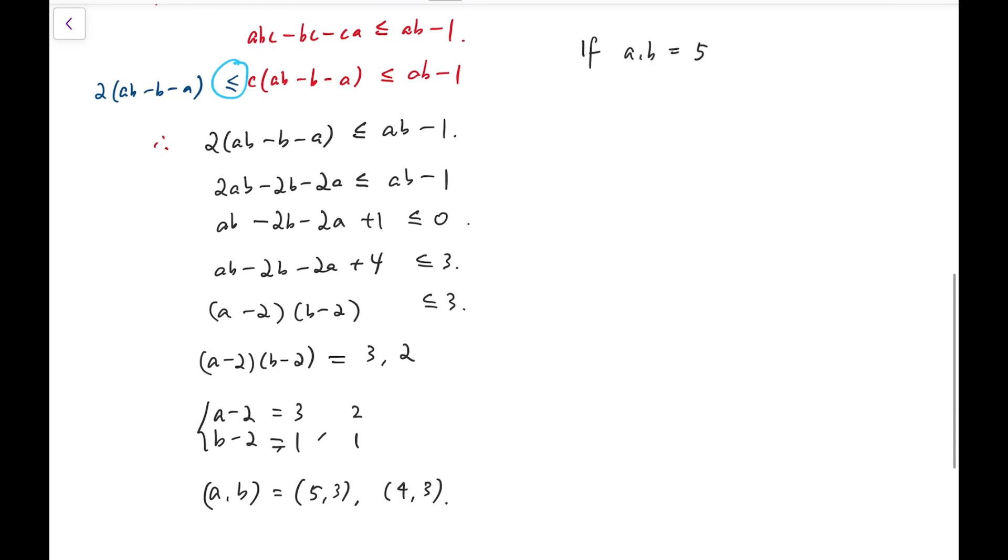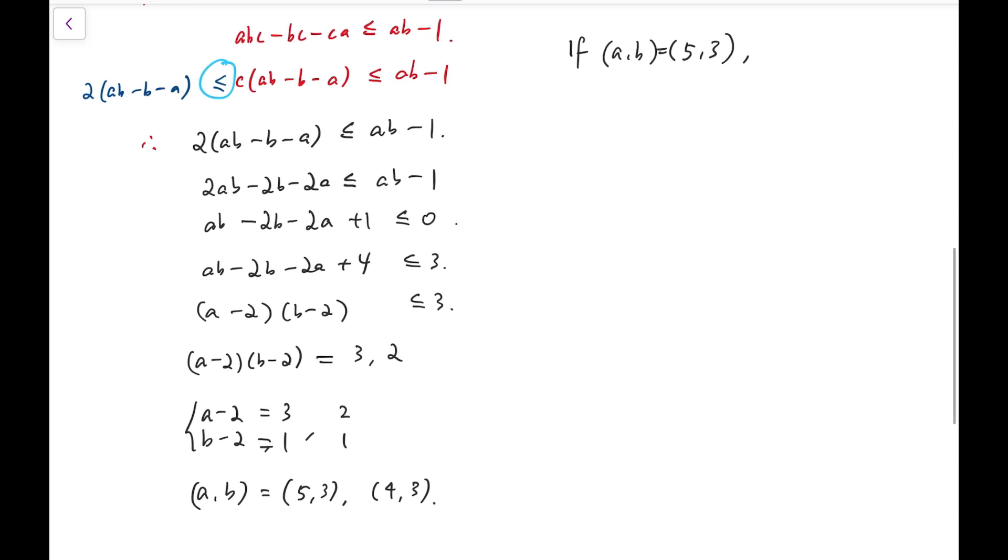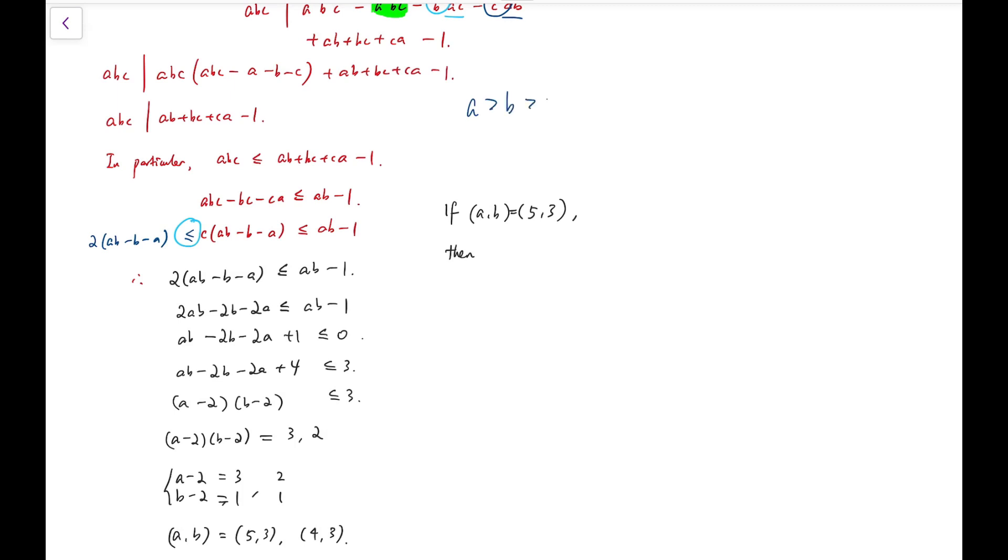Now, we can check both cases. Because B is three and if we recall that we have this inequality, if this is three, then all we can have for C is two. And in fact, we have two divides five times three minus one, five divides two times three minus one, and three divides two times five minus one. So, it's a tick.